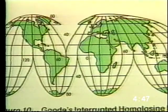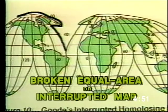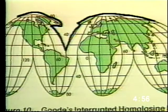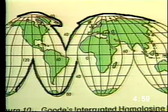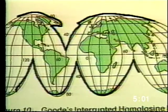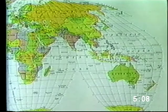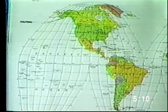Another common type of equal area projection is the broken equal area or interrupted map, such as the Goode's Interrupted Homolosine map, as shown here. The oceans are interrupted or broken, but the continental areas are correct and well shaped. This type of map is valuable for showing the world distribution of climate, precipitation, vegetation, or other data.